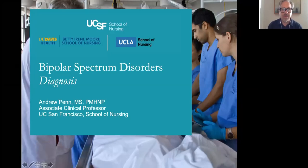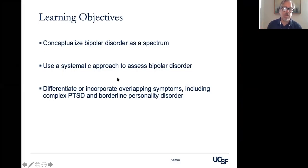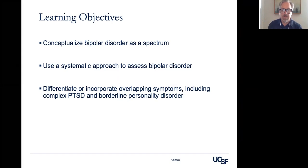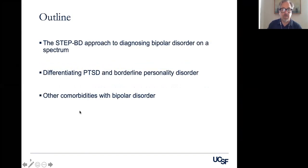Hi, Andrew Penn, back again to talk about bipolar spectrum diagnosis. In our last talk, we discussed how bipolar disorder really should be thought of as a spectrum disorder, ranging from unipolar depression, minimally recurrent, to bipolar disorder, highly recurrent. And we're going to talk about a way of using a systematic approach to assess for that. We'll also talk about some diagnoses which can mimic bipolar disorder. So I'm going to teach you the STEP-BD approach.